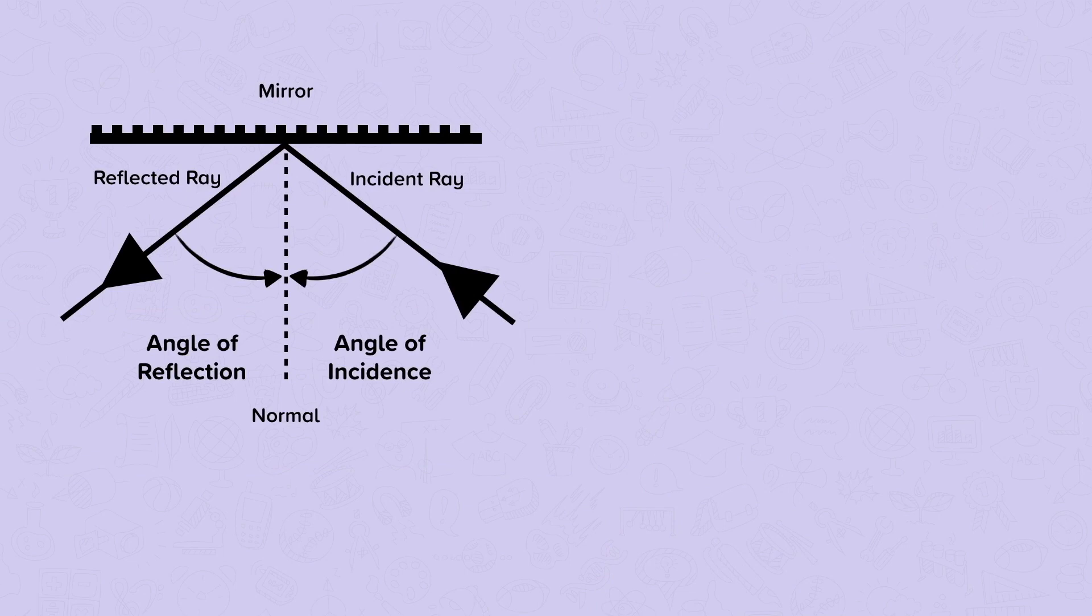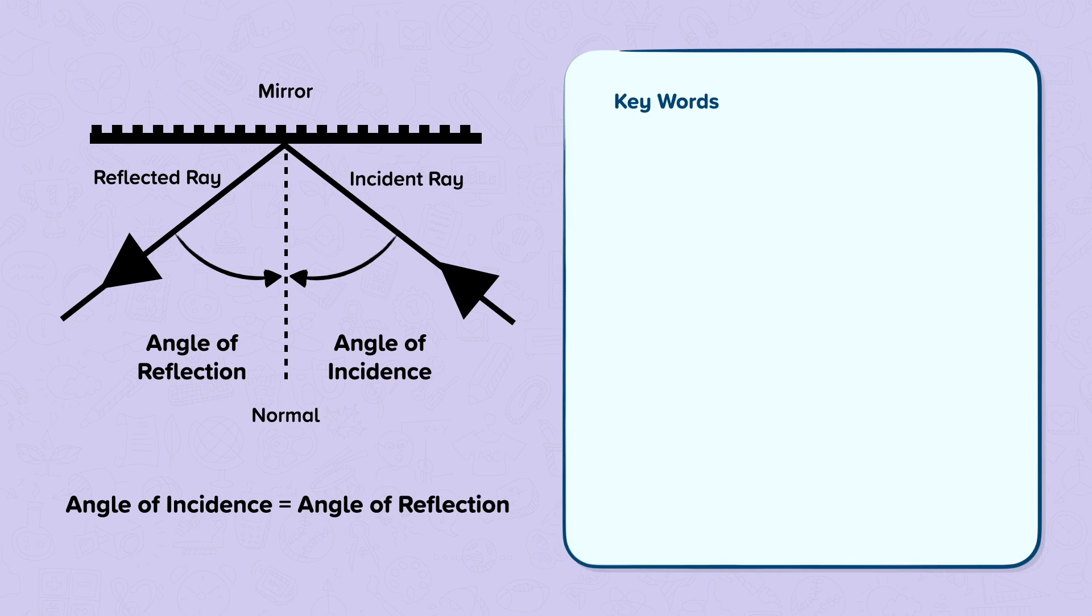To summarize, the law of reflection states that the angle of incidence equals the angle of reflection, as long as we measure our angles between the ray and the normal. And our key words.